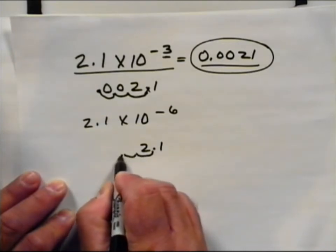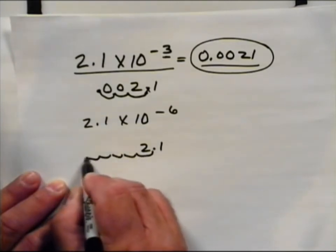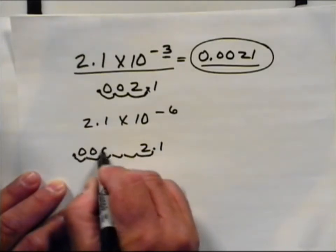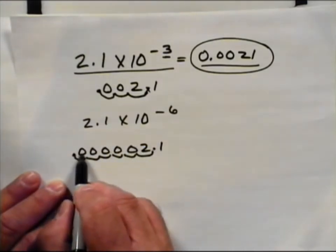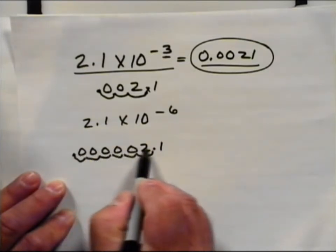1, 2, 3, 4, 5, 6. Fill in my zeros. And we're talking about a very small number here, 0.0000021.